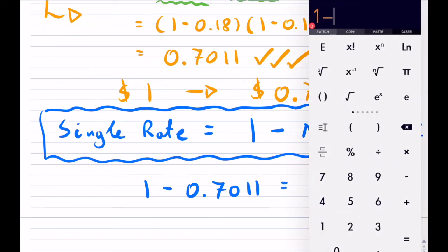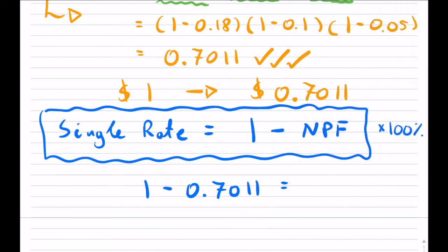So 1 minus 0.7011, which is 0.2989, that is your single rate. Now, this is a single rate as a decimal.